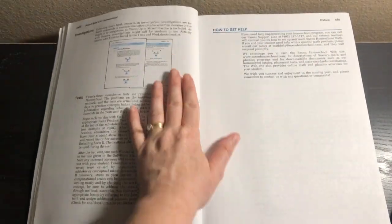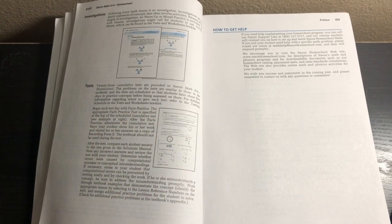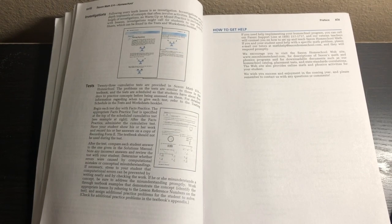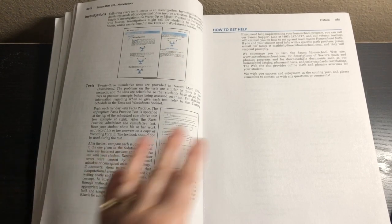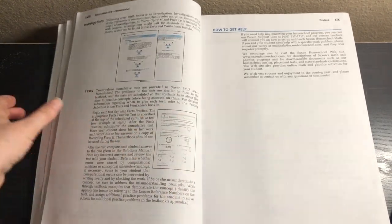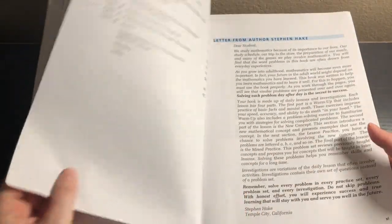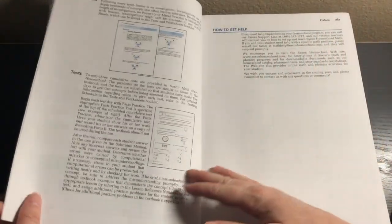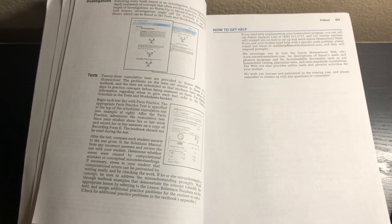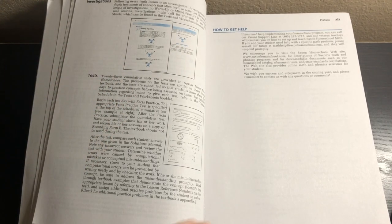There's the investigations and then there's tests. There's 23 cumulative tests. They start after lesson 10 and then they're every five lessons. There's also 12 investigations. If you add the 120 lessons plus the 23 tests plus the 12 investigations, obviously it's more than 120.